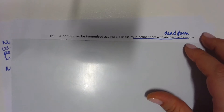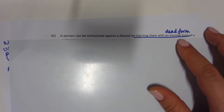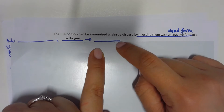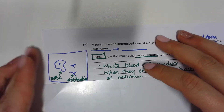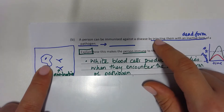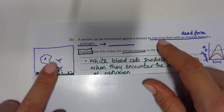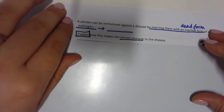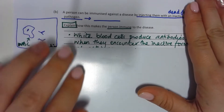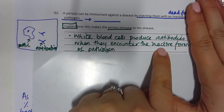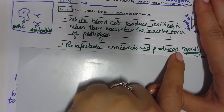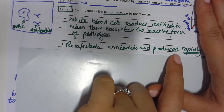A person can be immunized against a disease by injecting them with an inactive form of a pathogen — this is a vaccine. When a person is injected with a vaccine, the white blood cells start making antibodies. The person is now immune because the white blood cells produce antibodies when they encounter the inactive pathogen, and the second time round they produce antibodies rapidly upon reinfection.